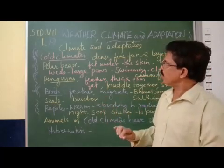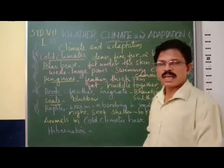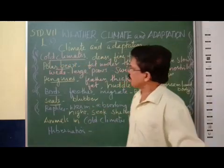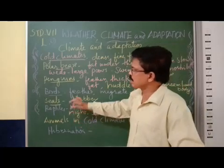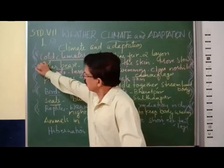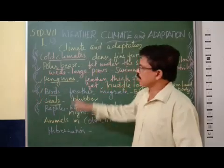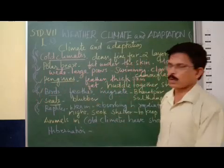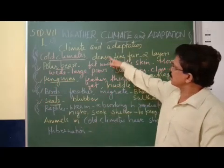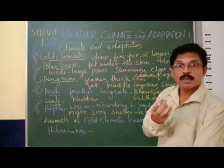Now we go over to environments. In the polar region, the climate is very cold. Animals found there include polar bears, penguins, birds, and sea animals. These are the four types of animals in the polar region. The polar bear has dense, fine, white-colored fur.